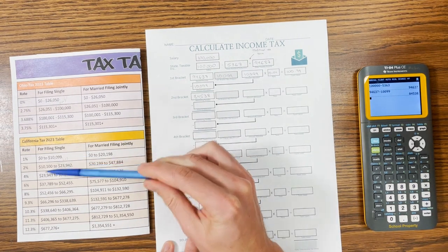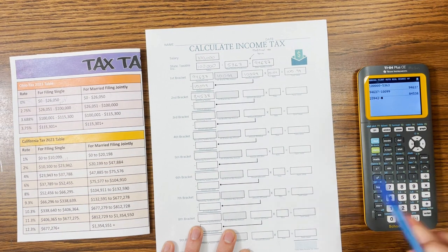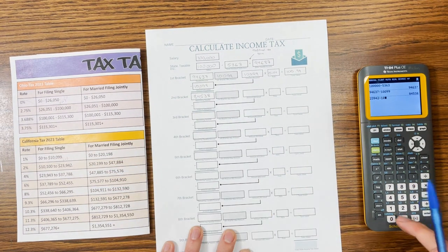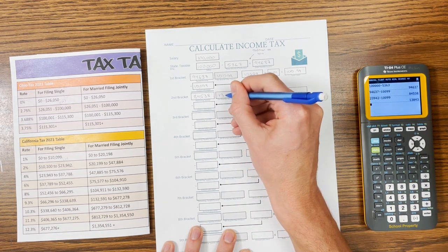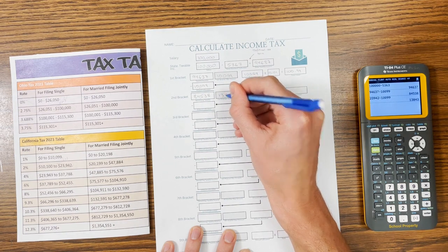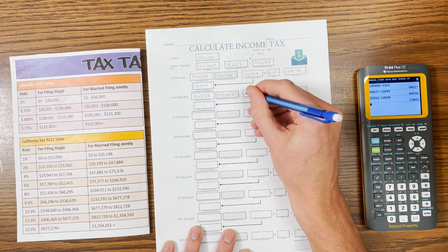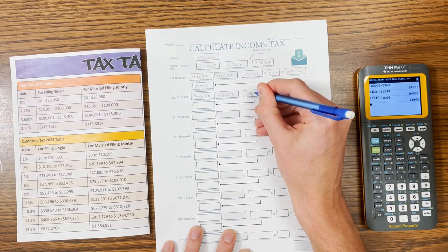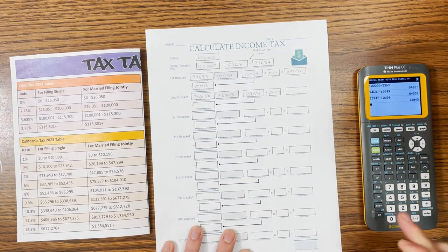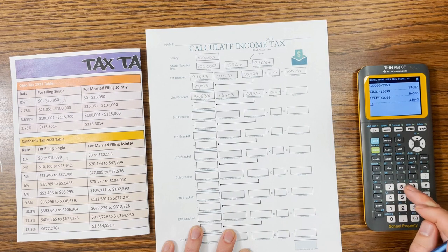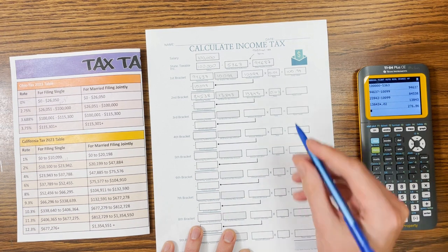The second bracket holds $23,942. Remember, we're going to subtract what we've already taxed, the $10,099. So that's $13,843. $84 is still much bigger than that, so we're going to put the full amount in. And this is a 2% tax rate, $0.02. So we've got $13,843 times .02, so $276.86.